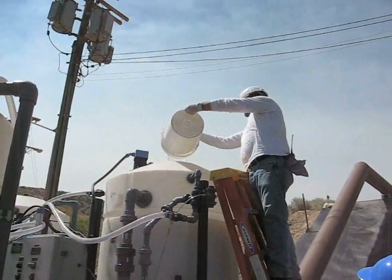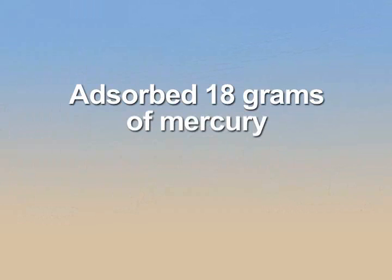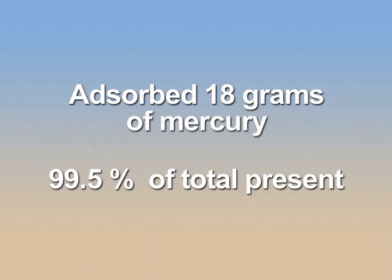In three days, the SES CSTR had adsorbed a total of 18 grams of mercury that constituted 99.5% of the total mercury present in the spent solution.